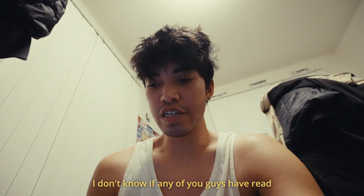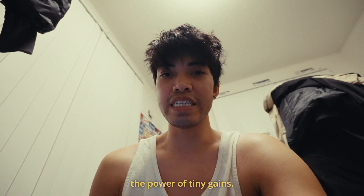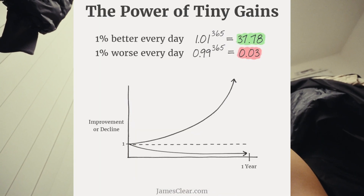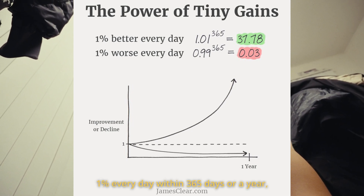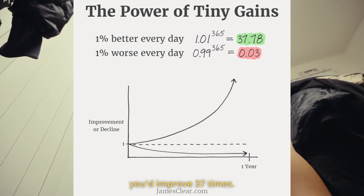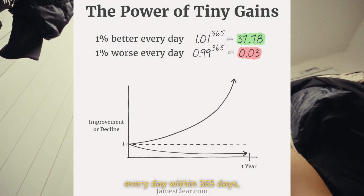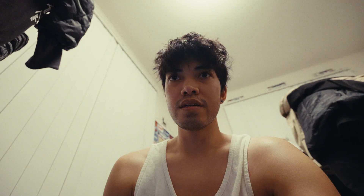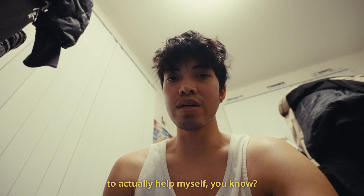I don't know if any of you guys have read Atomic Habits by James Clear. He has this thing called the power of tiny gains — he talks about how getting better at something 1% every day, within 365 days or a year, you would improve 37 times. And if you get 1% worse every day within 365 days you'd be 0.03 times your current level. I just think I probably haven't been doing anything to actually help myself.